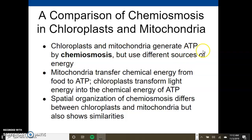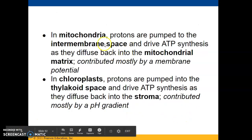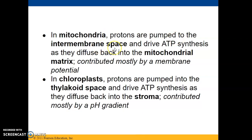Chloroplast and mitochondria generate ATP by chemiosmosis, but they use different sources of energy. The mitochondria will transfer chemical energy from food to ATP, whereas the chloroplast will transform light energy into the chemical energy of ATP. In the mitochondria, protons are pumped to the intermembrane space and they drive ATP synthesis as they diffuse back into the mitochondrial matrix.